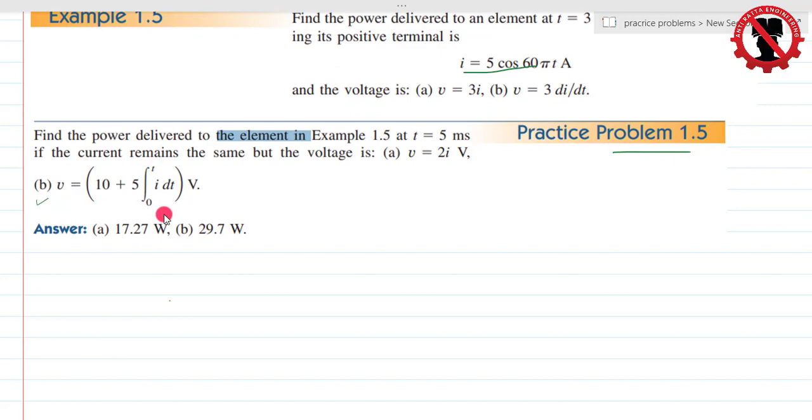So we will solve this first. The data is given: current is equal to 5 cos of 60 pi T. And the voltage has 2 values. The first value is V equal to 2i. And the other part, I have voltage equal to 10 plus 5 integration from 0 to T of I DT. And these are total voltages. And I have to find that P equal to Vi. So for part A...